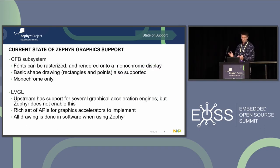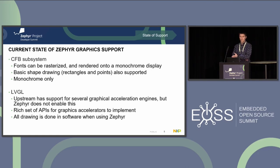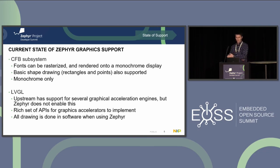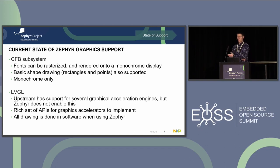Now let's look at the current state of Zephyr graphics support. First, the CFP subsystem — we've had this in Zephyr for quite a while. It allows you to use character frame buffer fonts, converting a font into a raster and rendering it onto a monochrome display. There was recently a PR merged that allows basic shape drawing. The key limitation is that it's monochrome only — it's not meant for more complicated multicolored displays, with no concept of blending or complex shapes.